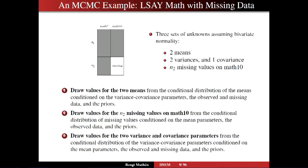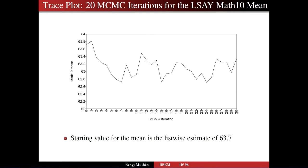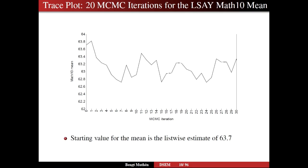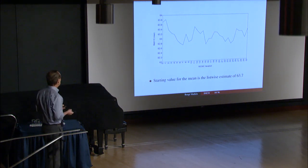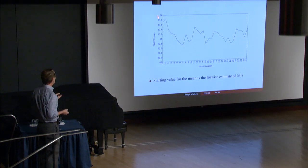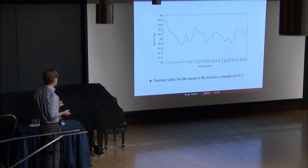We keep doing this, reporting every 100 iterations in the M+ Tech 8 output. It's random draws, and here's what it looks like — described in a trace plot. On the x-axis we have the iterations, which eventually converge. On the y-axis we have one parameter — the mean from Math 10 that we're trying to estimate.